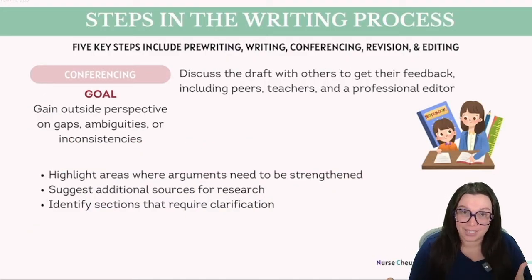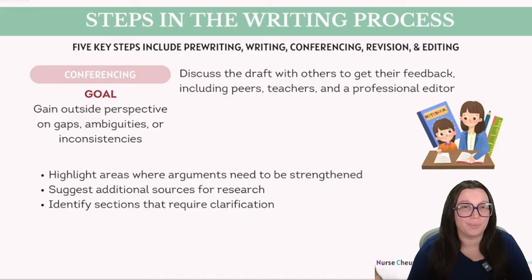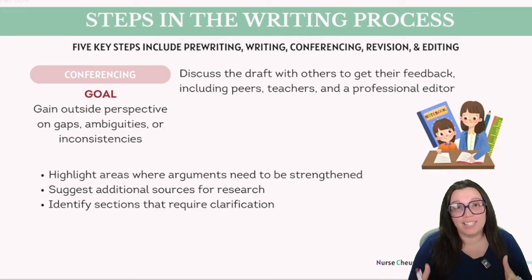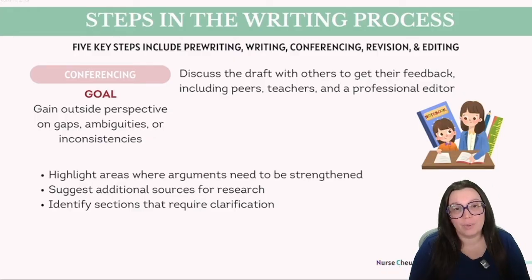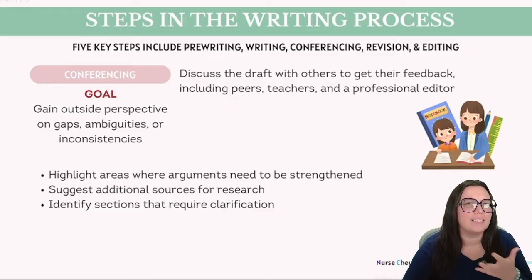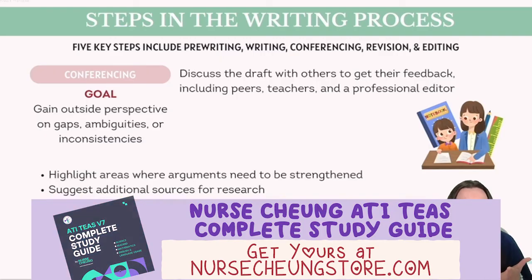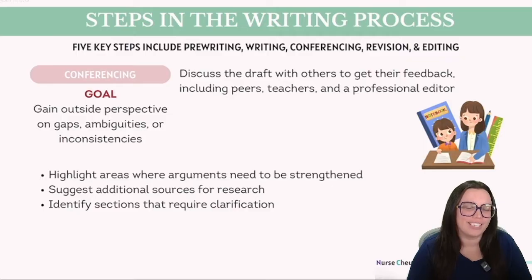Step three, the most commonly missed step, is conferencing. Writing conferences are collaborative meetings between writers and peers as well as instructors, where they discuss a piece of writing to provide feedback and suggestions for improvement. These conferences can occur at any stage within the writing process from initial planning all the way up to final revisions, with the focus on constructive criticism to enhance clarity, coherence, and overall impact. For example, a student might meet with their professor to discuss the first draft of a research paper, where the professor highlights areas needing strengthening and suggests additional resources. Writing conferences ultimately serve as an invaluable tool for writers seeking to develop their skills and produce more effective written communications.